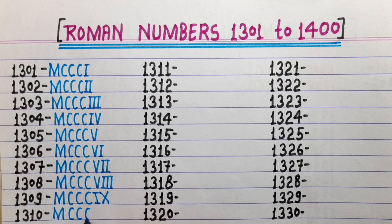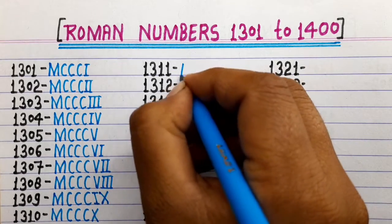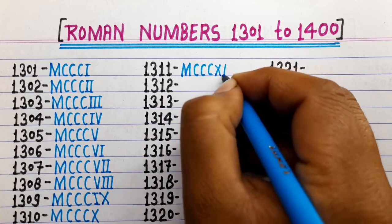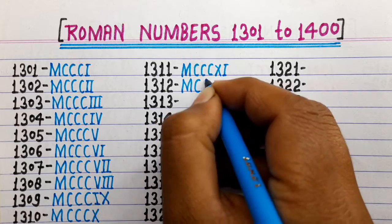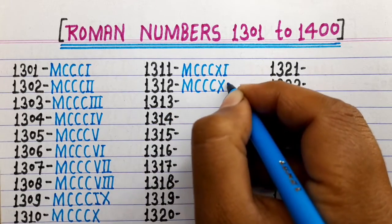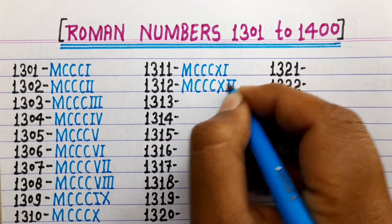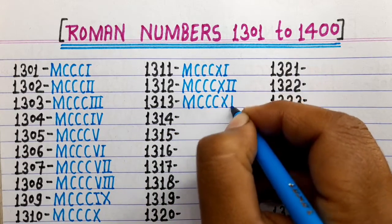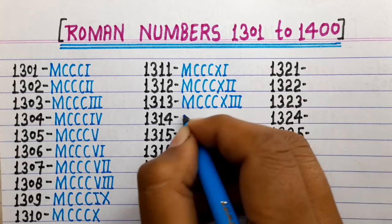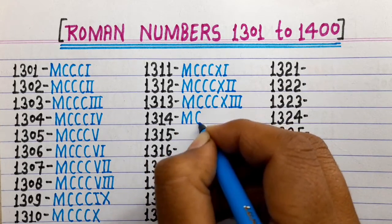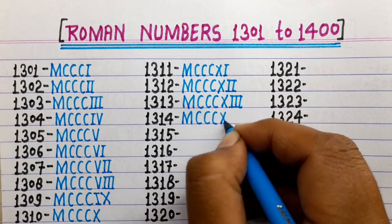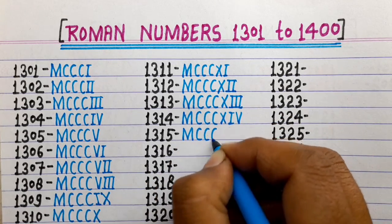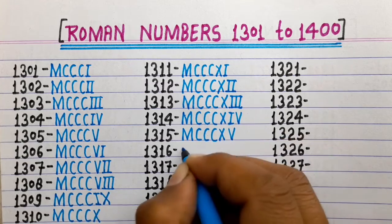1310 is MCCCX. 1311 is MCCCXI. 1312 is MCCCXII. 1313 is MCCCXIII. 1314 is MCCCXIV. 1315 is MCCCXV.